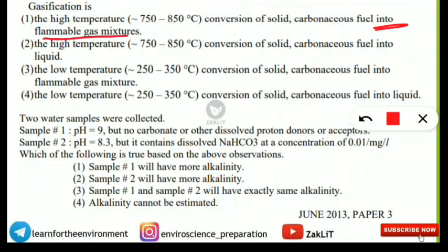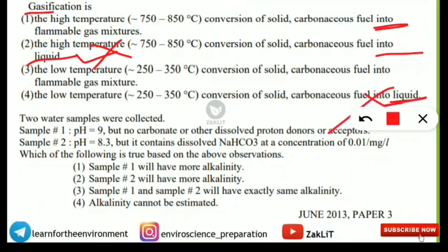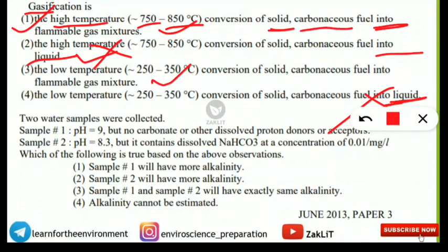Among the options, the ones mentioning conversion into liquid are eliminated because gasification concerns gas, not liquid. Option one is correct: it is a high-temperature process — around 750 to 850 degrees Celsius — which converts solid carbonaceous fuel (composed of carbon) into a flammable gas mixture. Write in the comment section which gases make up this mixture.